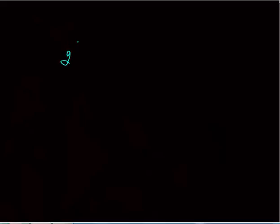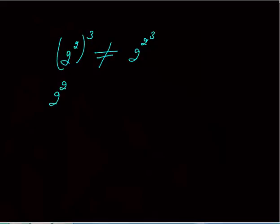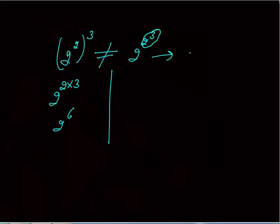One more important concept: there is a difference between (2^2)^3 and 2^(2^3). In the first case, with brackets, we multiply the exponents: (2^2)^3 = 2^(2×3) = 2^6. In the second case, without brackets, we solve from the top: 2^3 = 8, so 2^(2^3) = 2^8 = 256. These two are clearly different.